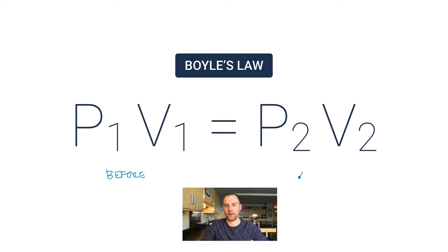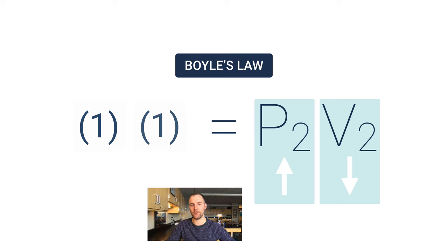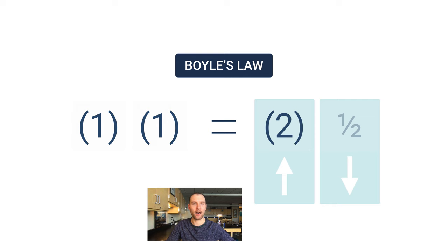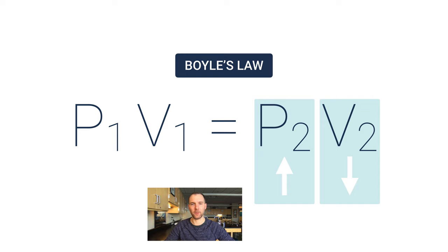When we're multiplying pressure times volume on one side and pressure times volume on the other side, that's reflective of an indirect relationship. In order for this to stay equal, imagine a one here and a one here. If I double the pressure, make this a two, in order for two times something to be equal to one, this volume is going to have to decrease. It's going to have to be half. That's where this mathematical expression comes from, where we're multiplying the two variables together.